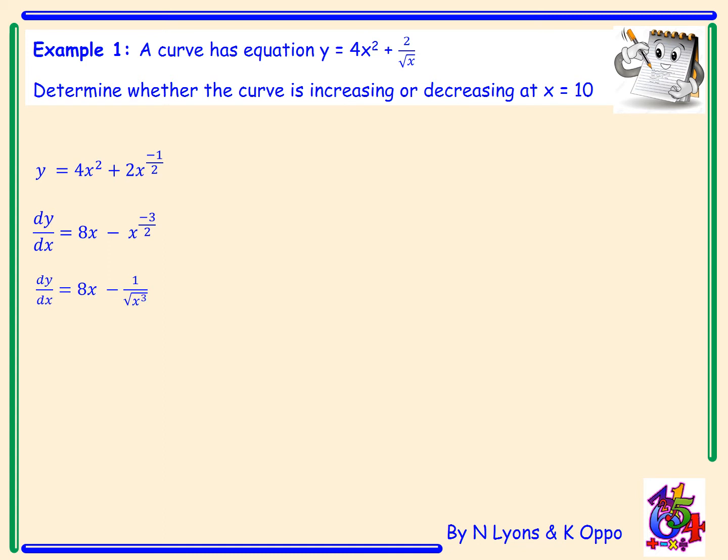We'll then rearrange this so that we have no negative powers and we also change back to third form. So x to the power minus 3 over 2 can be written as 1 over root x cubed.